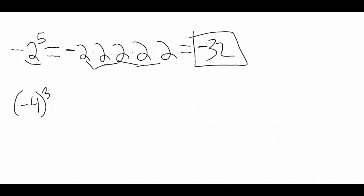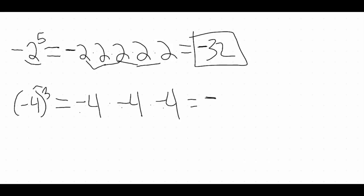Moving on to the bottom example, just so you can see the difference: in that bottom example we have parentheses around the negative four, and that's being raised to the third power. The fact that we have those parentheses around the negative four means that that three — that exponent — goes to all of negative four, not just the four. So when we expand this, negative four cubed means negative four times negative four times negative four, because we have the parentheses around it.